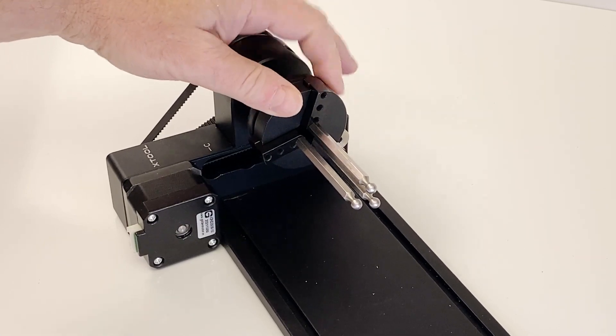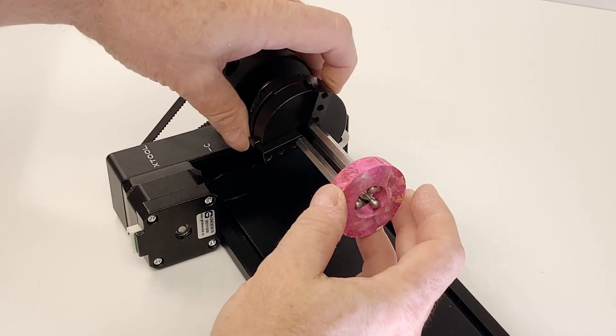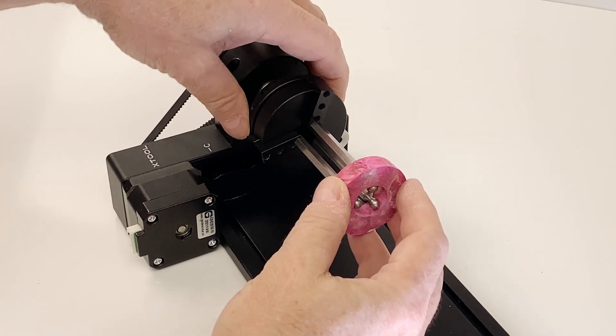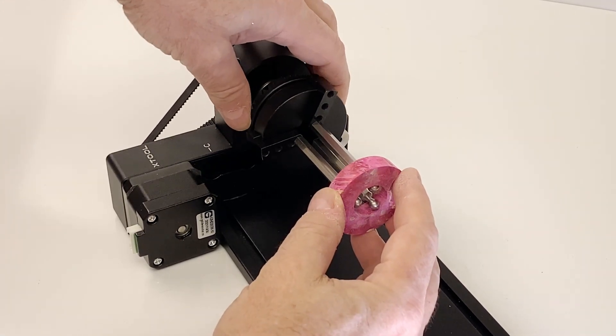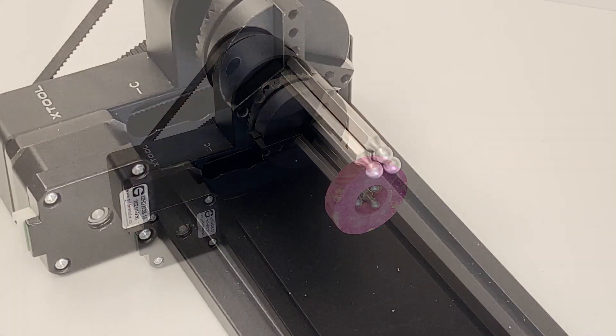Instead of mounting jaws, you can use the included studs and place them into any of the chuck mounting holes. This can be very useful for holding small parts, expanding from within a center hole, or gripping from the outside perimeter.